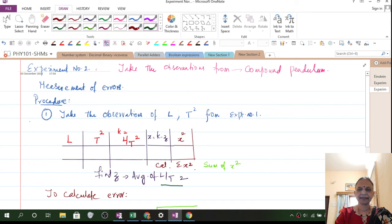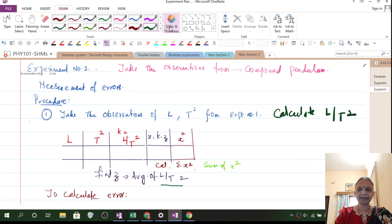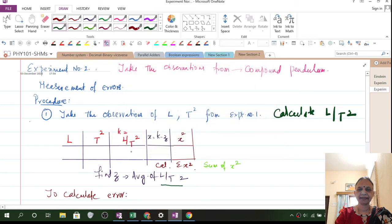Then from each of these values you would calculate here. Calculate L by T square. For everything you have to calculate L by T square. Then for each L and T you have different entries.